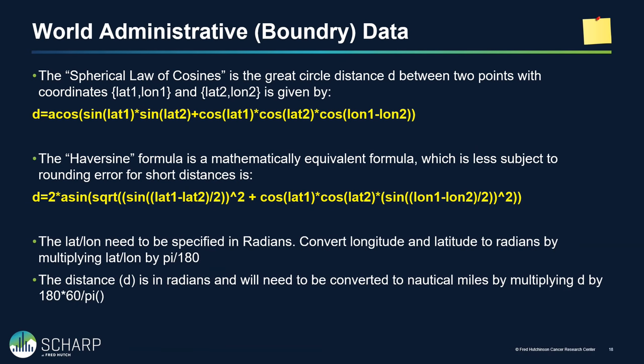Let's talk about airplane math — great circle math. Spherical law of cosines versus Haversine formula. They are complex. This is actually a simplified version, because latitude/longitude values need to be in radians, not their normal format — you multiply each by pi divided by 180. The output is in radians, and you need to convert that into nautical miles by multiplying the output by 180 times 60 divided by pi.